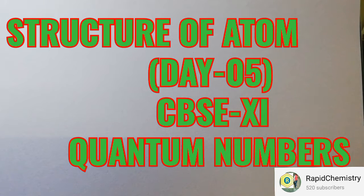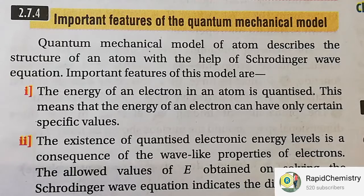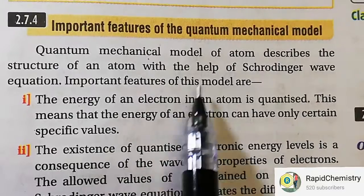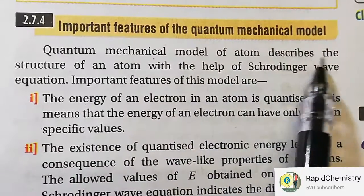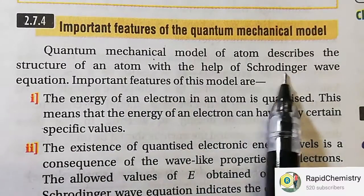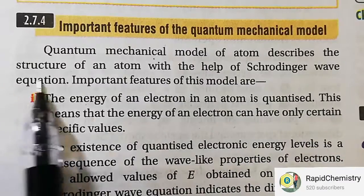This is because classical mechanics ignores the dual behavior of matter, which we have studied last day, and the uncertainty principle. The branch of science that takes into account this dual behavior of matter is called quantum mechanics. Now let's look at the important features of the quantum mechanical model.